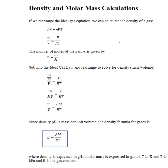Given the right information, we can use PV equals nRT to solve for the density or the molar mass of an unknown gas. What we can also do is derive a relationship between the density and the molar mass for quick solutions.